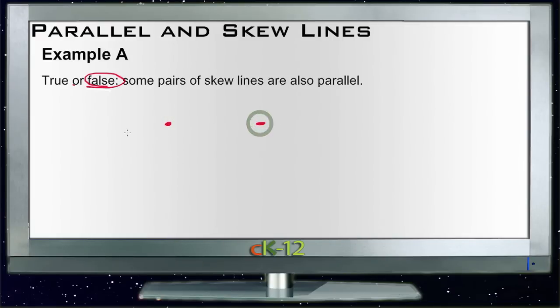The definition of skew says they're on different planes, and the definition of parallel says that they're on the same plane. So there's our two parallel ones, all on one plane.